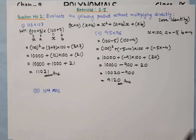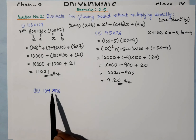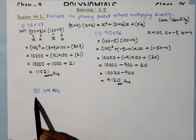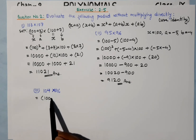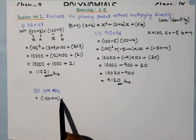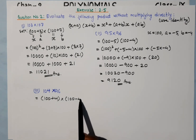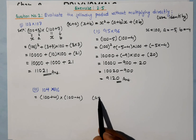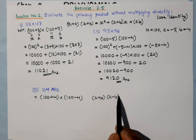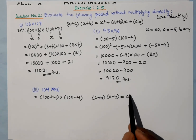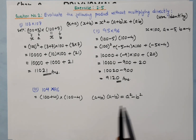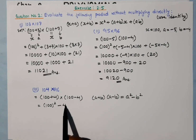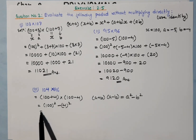For question number three: 104 × 196. We can write this as (100 + 4) × (100 − 4), which fits the identity (a + b)(a − b) = a² − b².